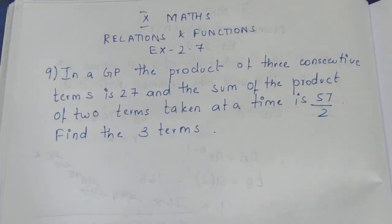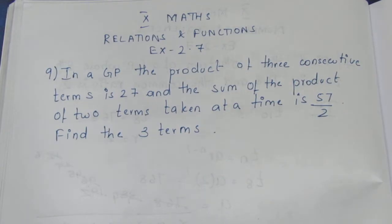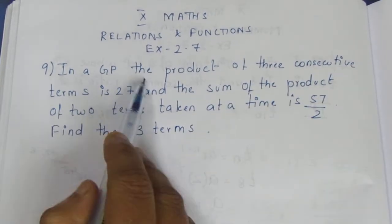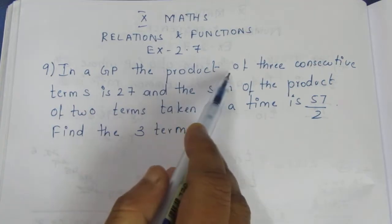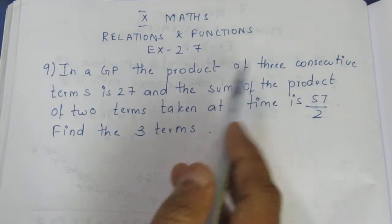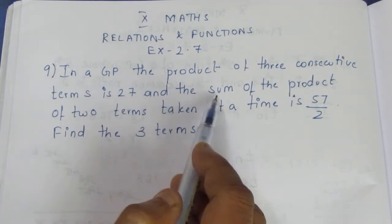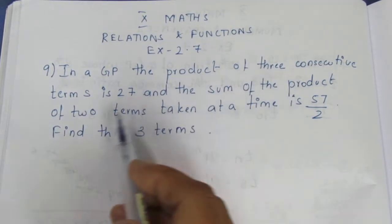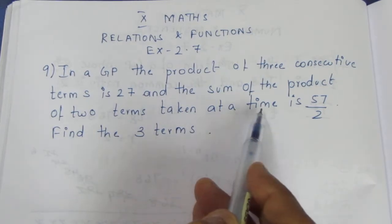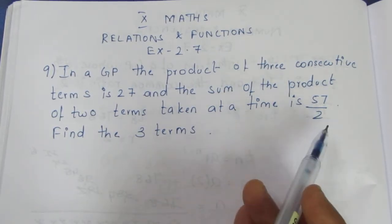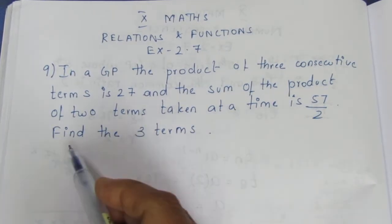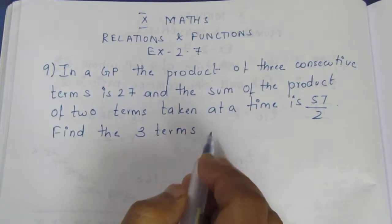Hello viewers, I am Ikely. In 10th maths, Relations and Functions, Exercise 2.7, 9th sum. The question: in a GP, the product of 3 consecutive terms is 27 and the sum of the product of 2 terms taken at a time is 57 by 2. Find the 3 terms.